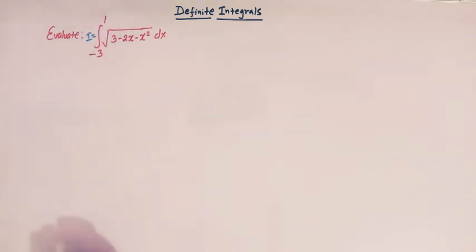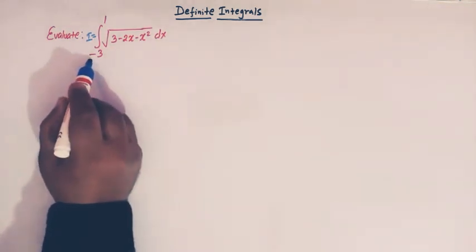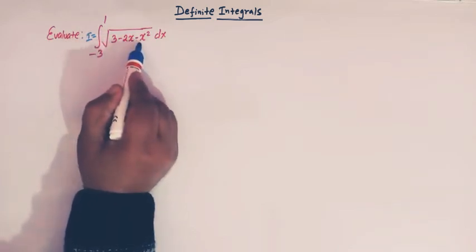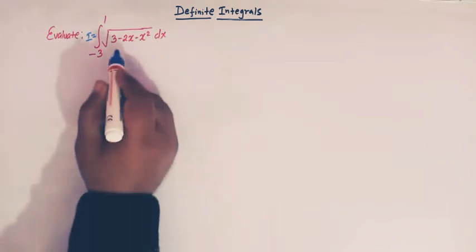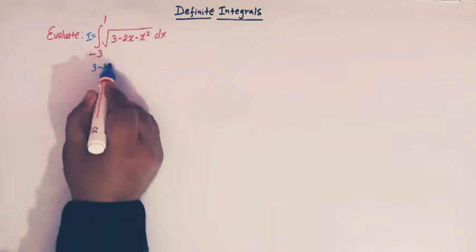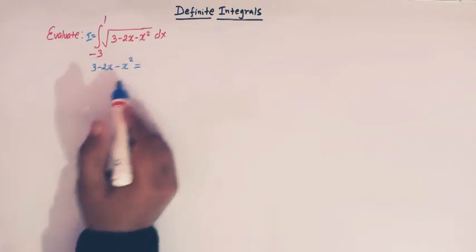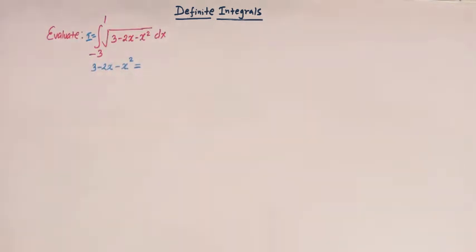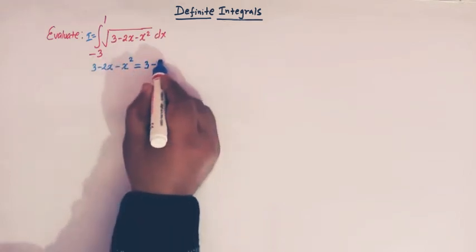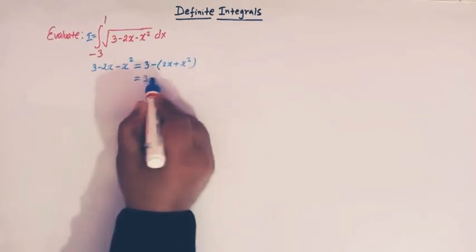Let us first call this integral as I. The limits of integration are from minus three to one, and the integrand is the square root of 3 minus 2x minus x squared. Let us first express this quadratic form — that is, 3 minus 2x minus x squared — in terms of a perfect square. Taking minus common, we have minus(2x + x²).